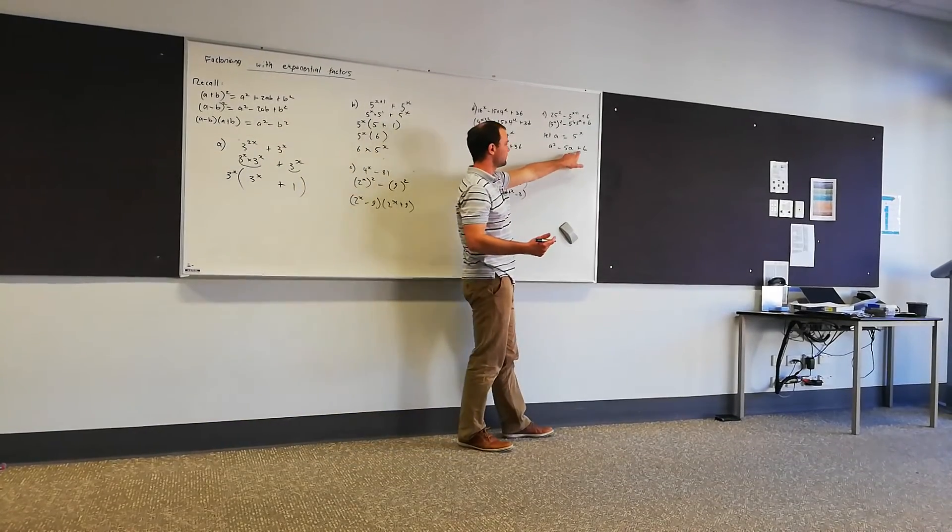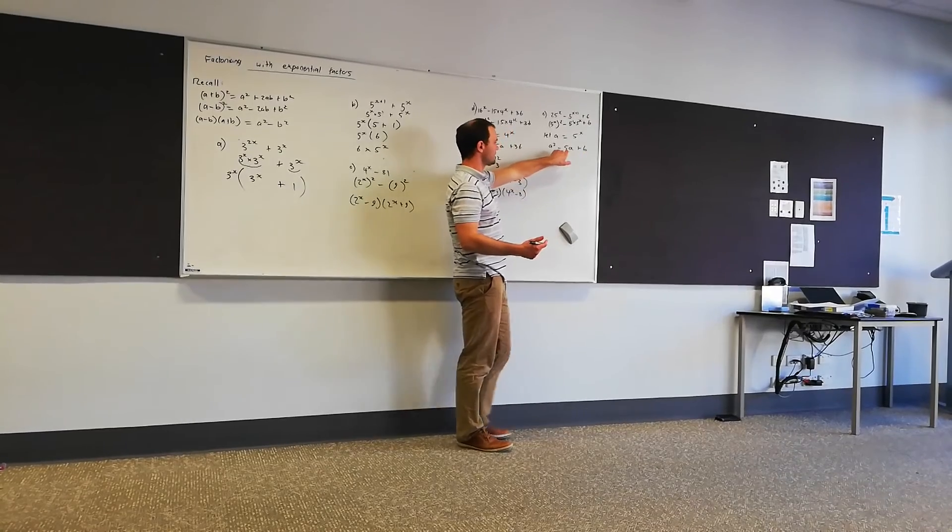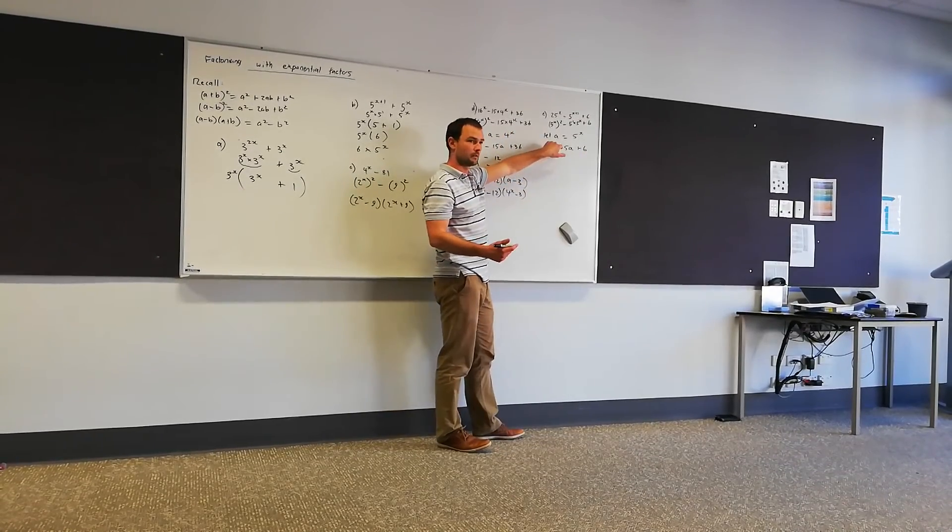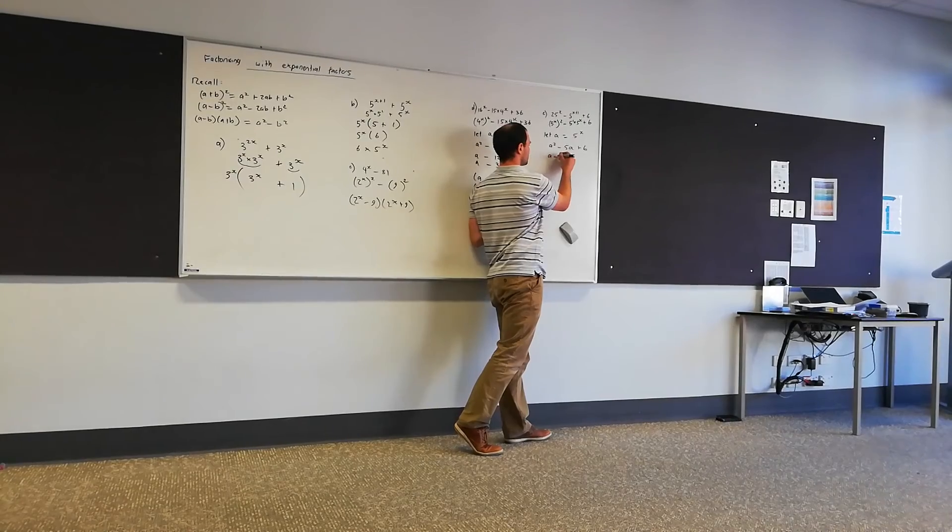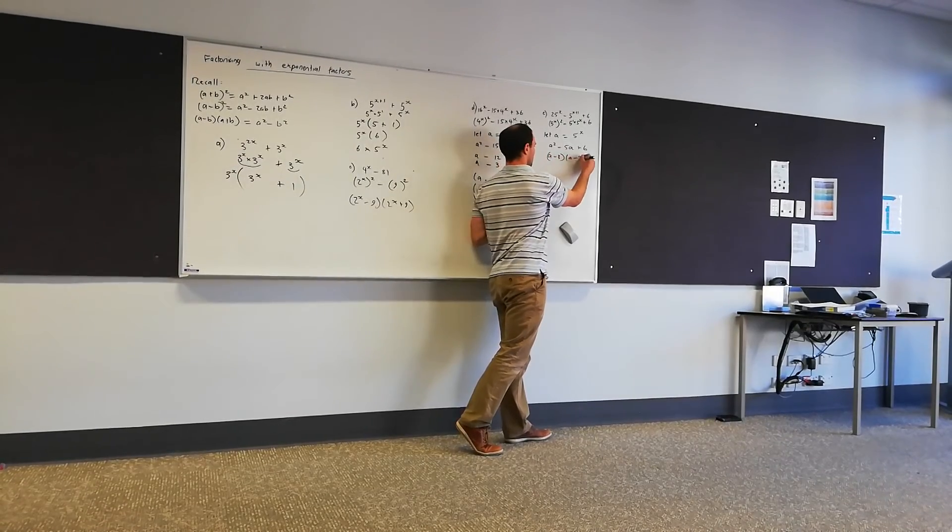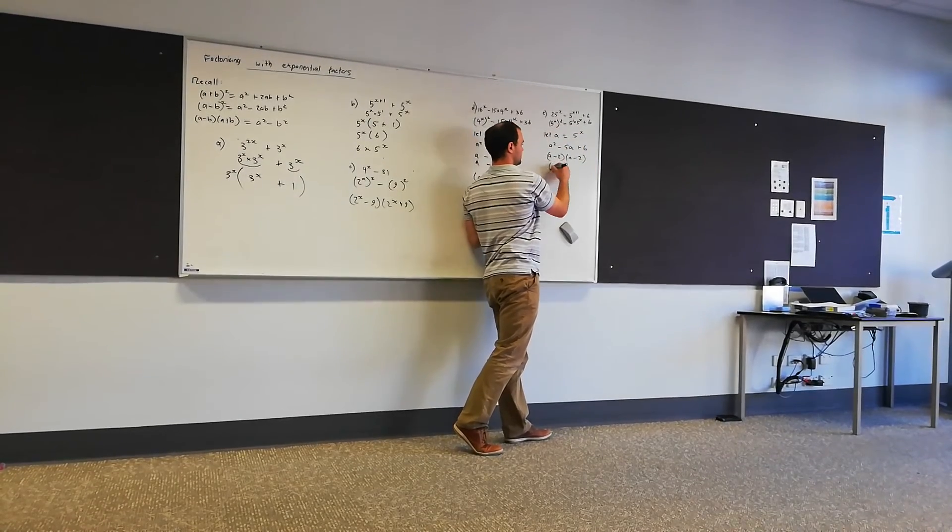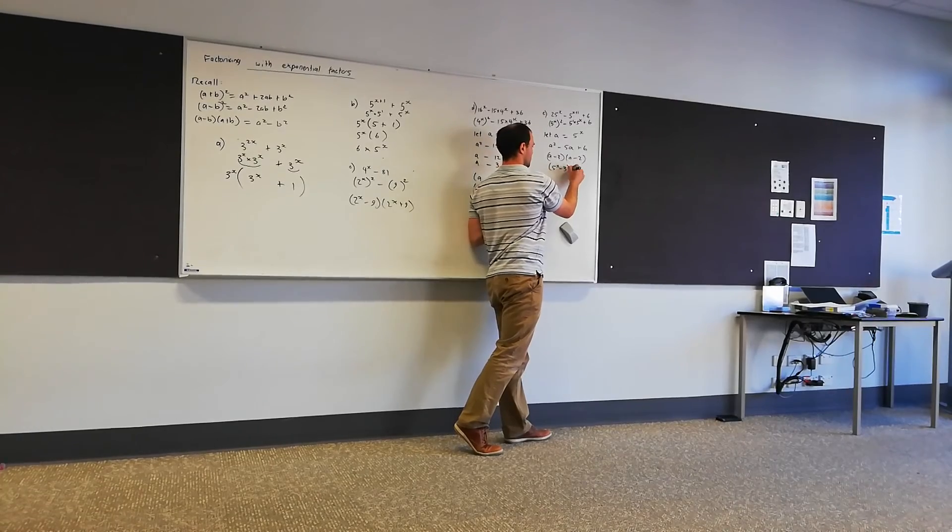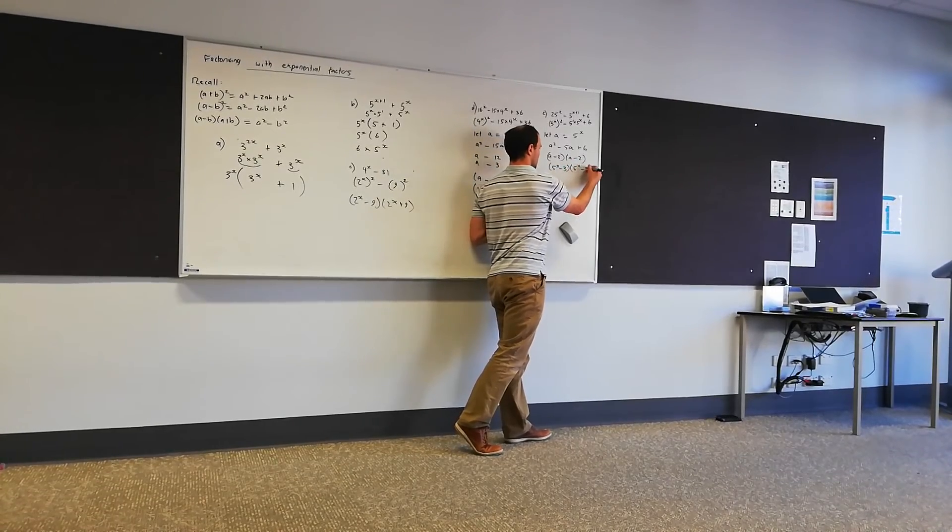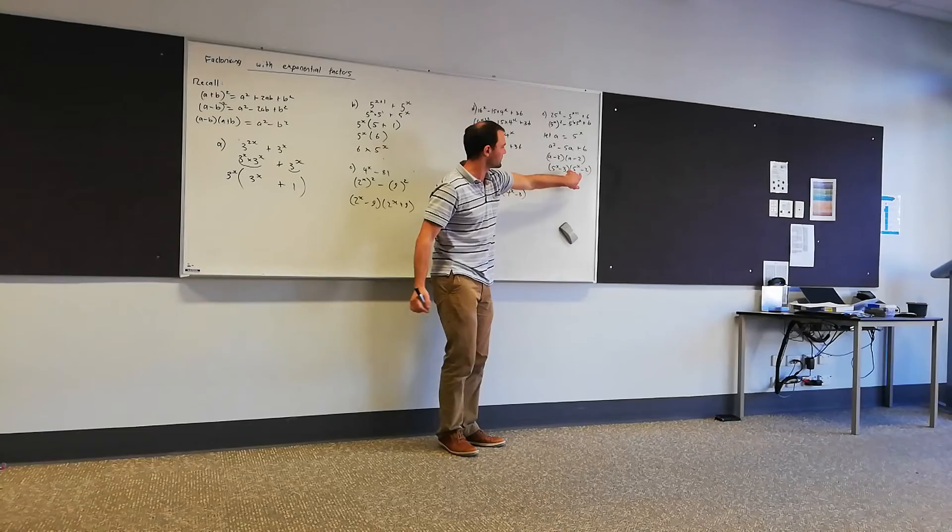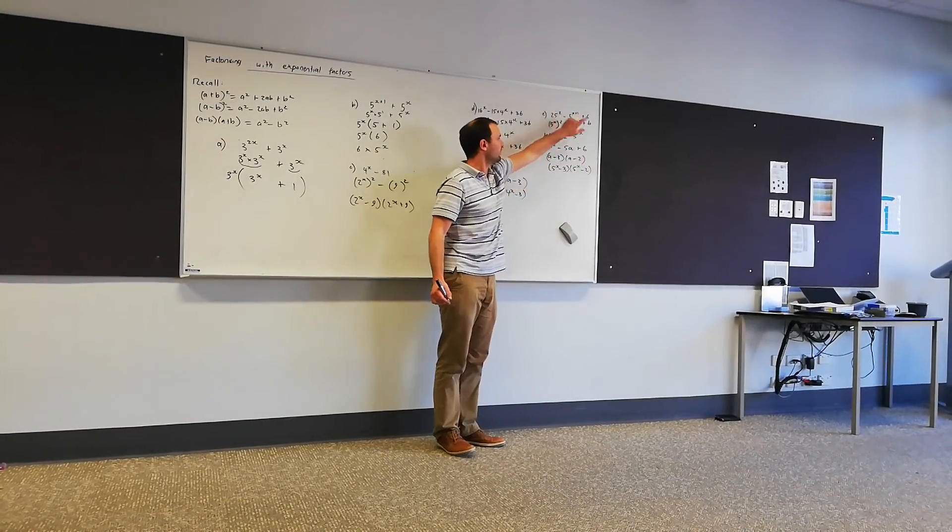So two numbers multiply together to give us 6, add them together to get minus 5. Minus 3 and minus 2. And then we'll sub the a back in. Okay, and again if we were to expand that we're going to get what we've got up here.